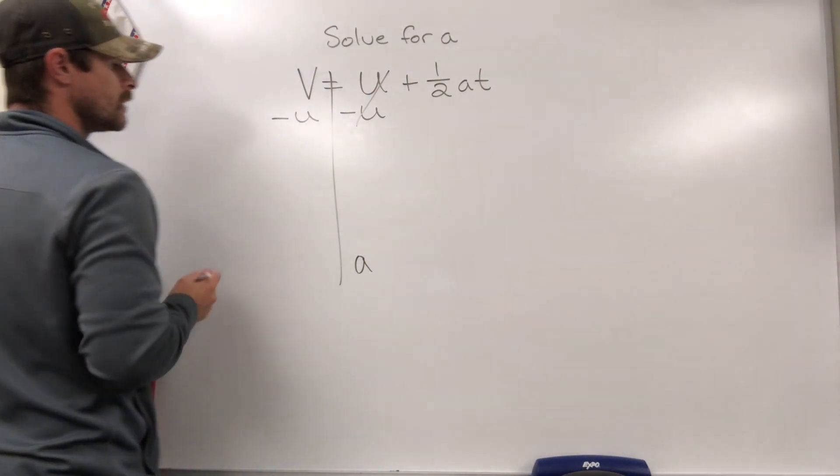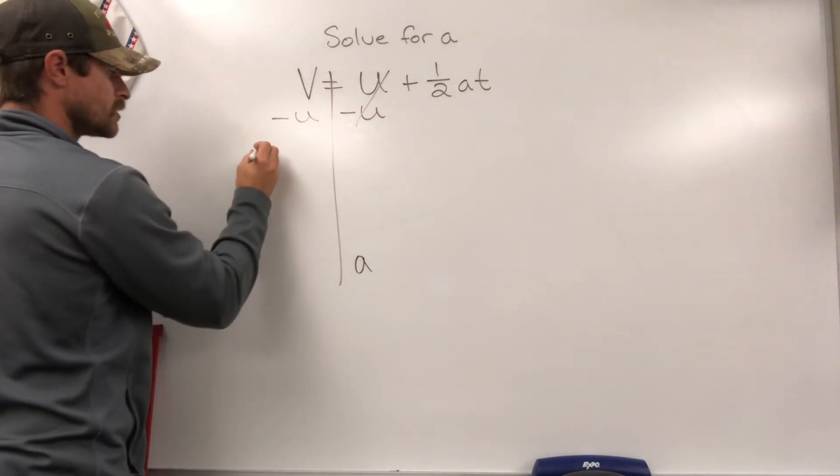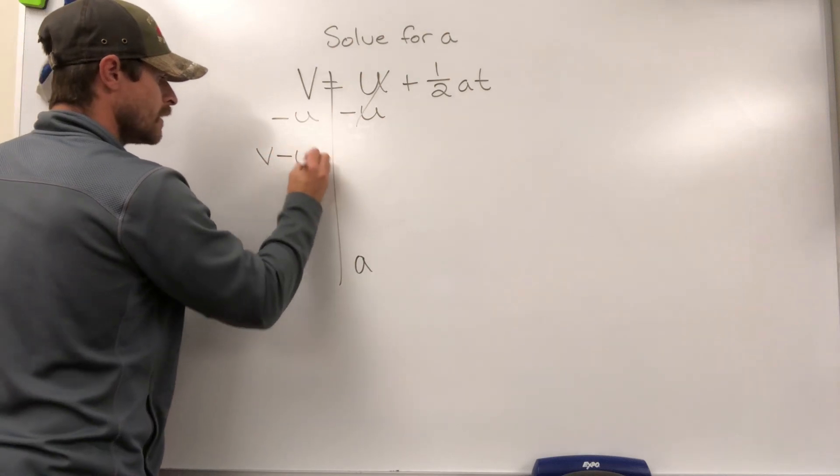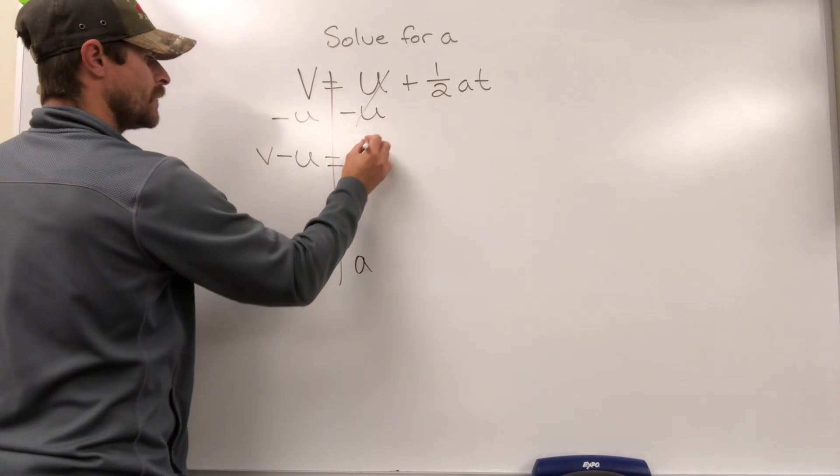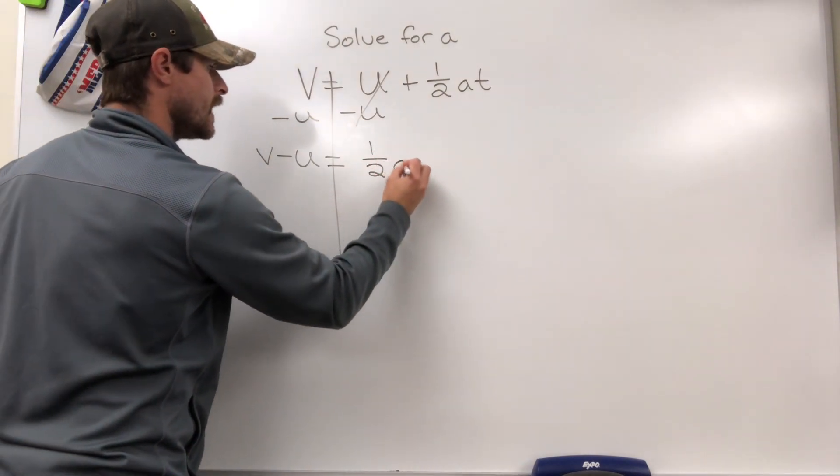Moving it to the left, V minus U is equal to—what do we have left on the right? We've got one half, A, and T.